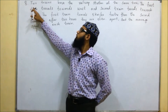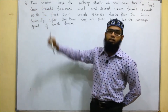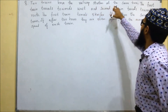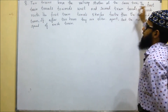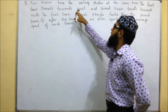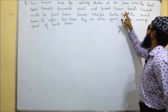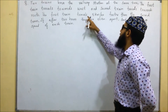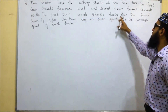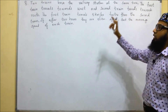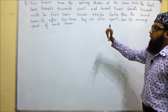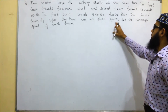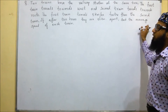This is the eighth problem. Two trains leave the railway station at the same time. The first train travels towards west and the second train travels towards north. The first train travels 5 km per hour faster than the second train. If after two hours they are 50 km apart, find the average speed of each train.